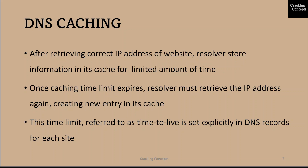Once the caching time limit expires, the resolver must retrieve the IP address again, creating a new entry in the cache. This time limit, referred to as the time to live or TTL, is set explicitly in the DNS records for each site. Typically a TTL is in the 24-48 hour range. A TTL is necessary because web servers occasionally change their IP addresses, so resolvers cannot serve the same IP from the cache indefinitely.